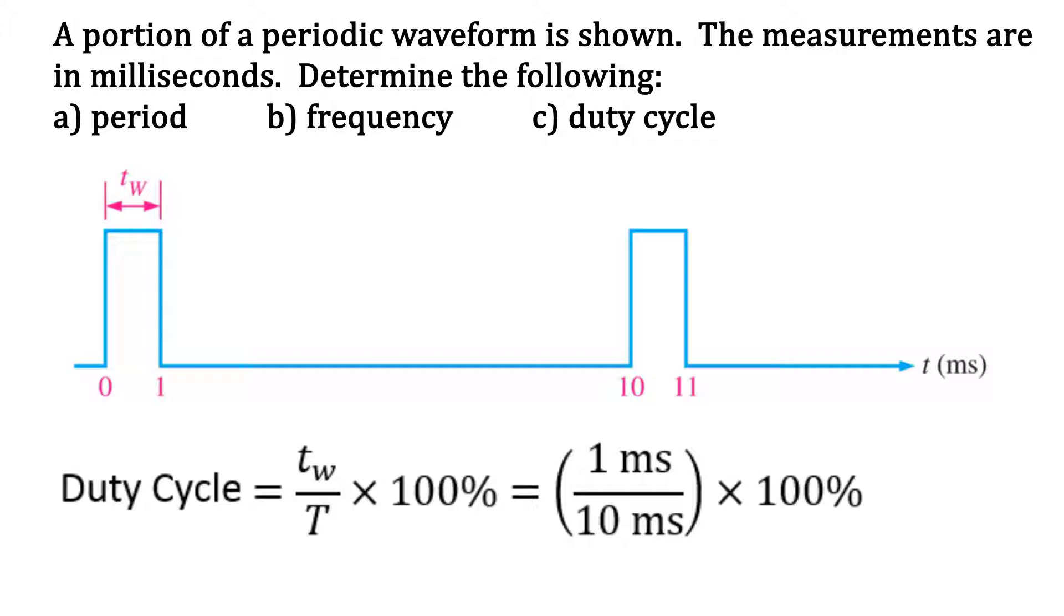So 1 divided by 10 times 100% gives us 10%. The duty cycle is 10%, which means the pulse is high for 10% of the period.